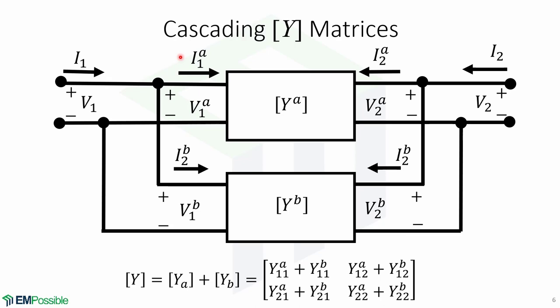We can also cascade Y matrices for two-port networks. It is very easy to obtain a combined Y matrix when the admittance networks are connected in a parallel configuration as shown here.